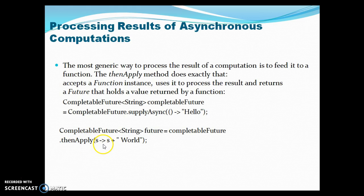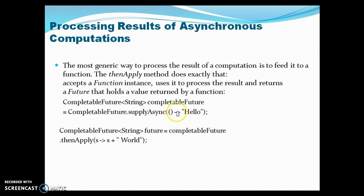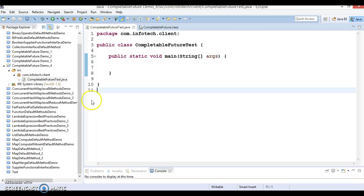On this CompletableFuture we are calling thenApply. As I mentioned, thenApply accepts a Function functional interface. Function takes one argument as input, you process it, and it returns a result. For simplicity we are just concatenating the result of the previous CompletableFuture — which is 'hello' — with 'world', so this is going to print 'hello world'. Let's go through Eclipse and understand this through an example.